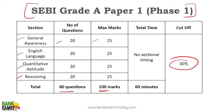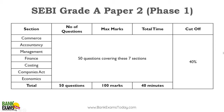The total cutoff is 30% — no sectional cutoff — you need to achieve 30% marks to pass Paper 1 of Phase 1. In Paper 2 of Phase 1, there is commerce, accountancy, management, finance, costing, Companies Act, and economics. The cutoff is 40%. There are 50 questions, 100 marks, and 40 minutes are allotted. Time management can be an issue here, covering all 7 sections.